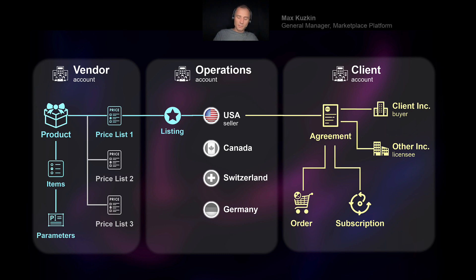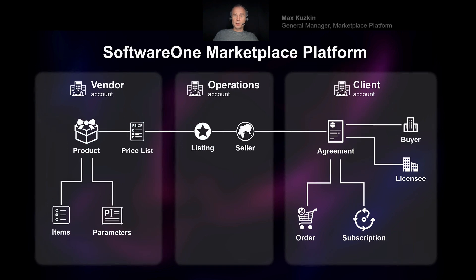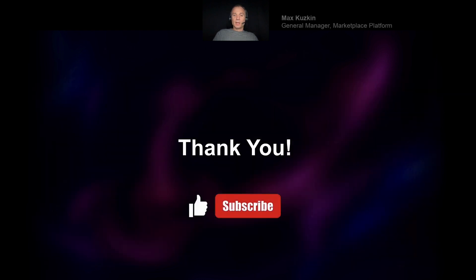With that, we've explained the whole platform at a high level. Obviously there are many more objects — API tokens, invoices, and others we'll discuss further — but this covers the basics and defines the logical model of the SoftwareOne Marketplace Platform. To reiterate: we have three types of accounts — vendor, operations, and client. Vendors define the product structure, operations makes those products available to clients, and clients establish agreements to procure those products in their legal structure, then place orders and maintain subscriptions.